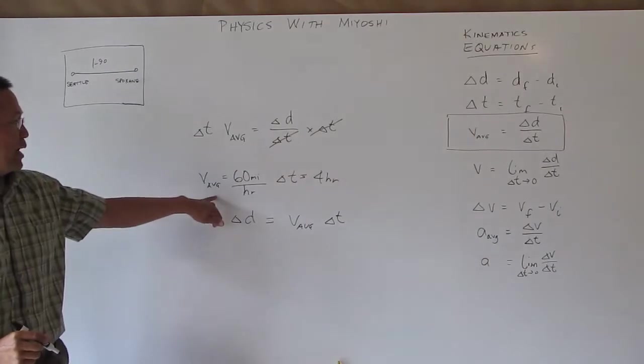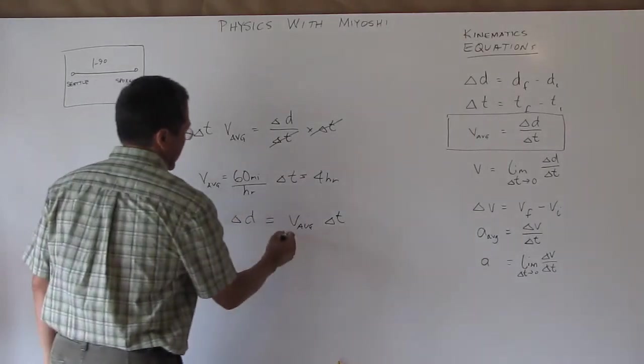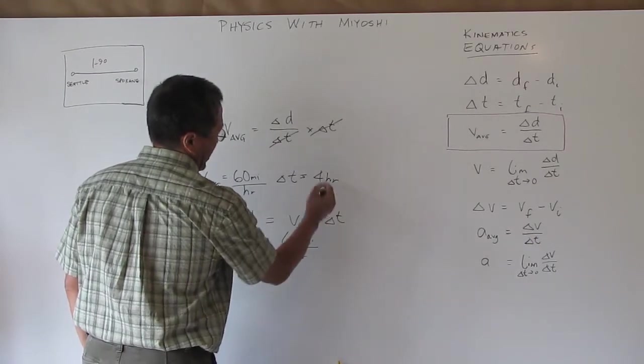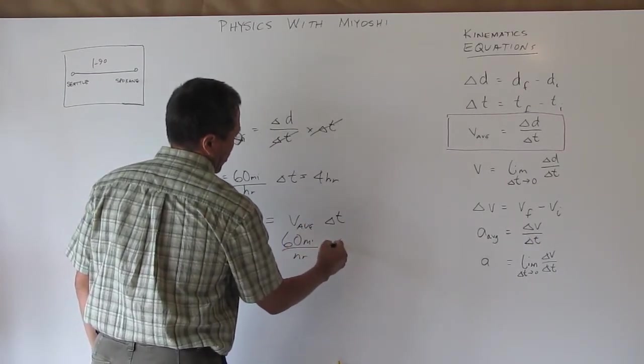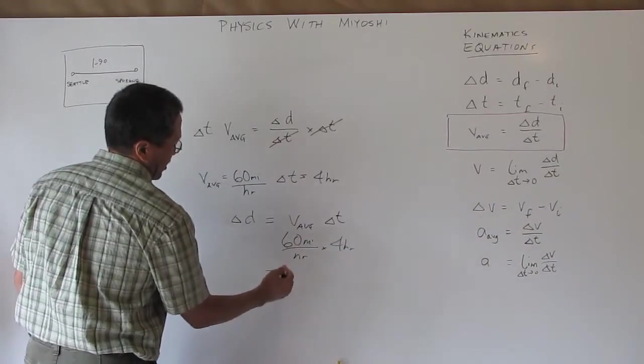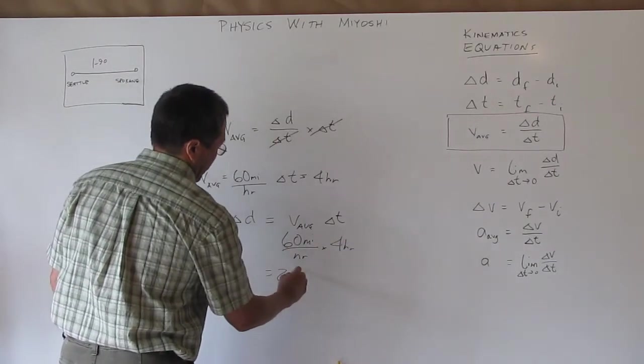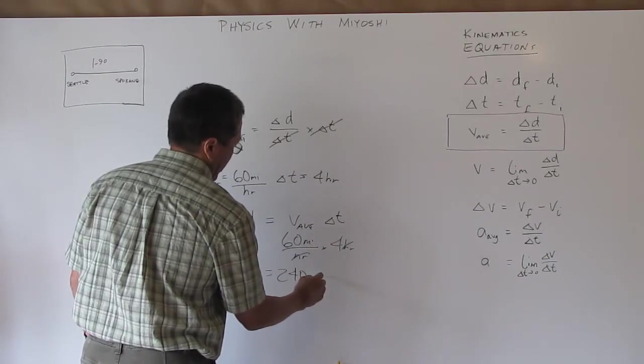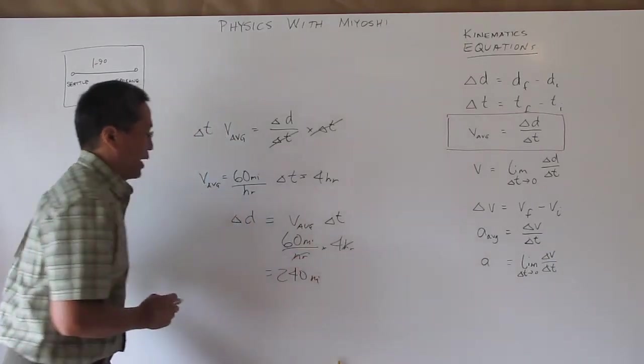So if I already know that my average speed is 60 miles per hour and I know that my delta t is four hours, I know that I traveled 240 miles because my hours and my hours divide out.